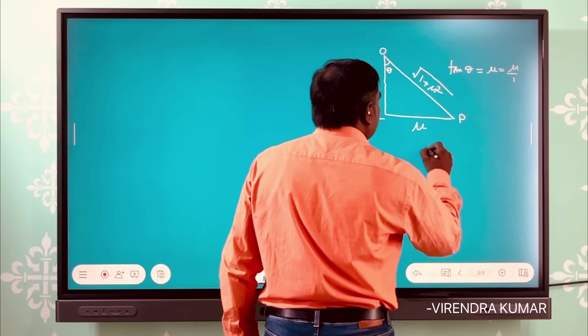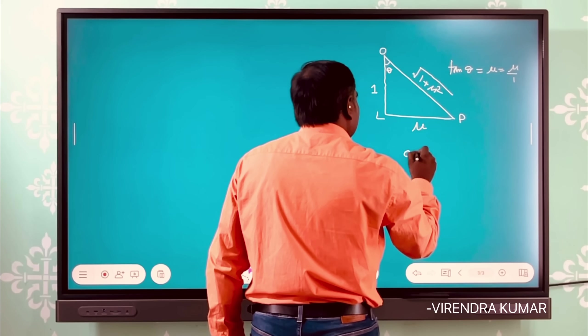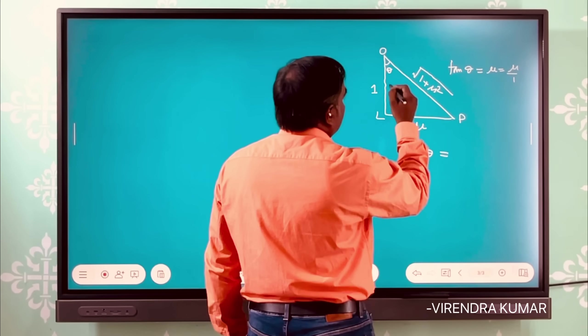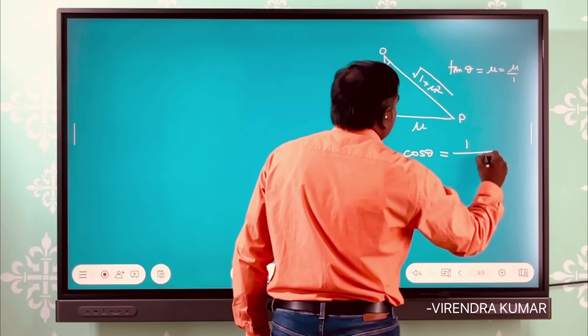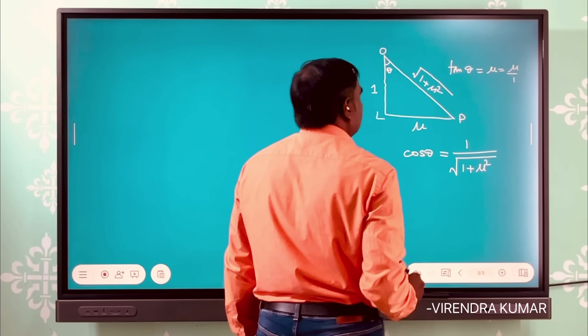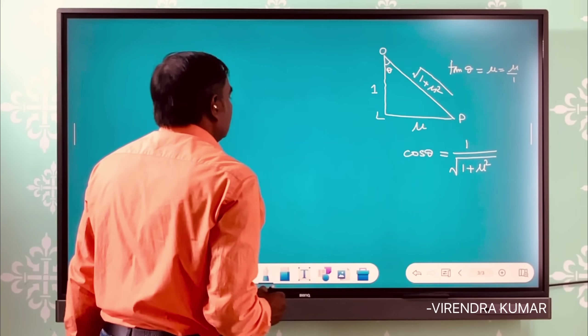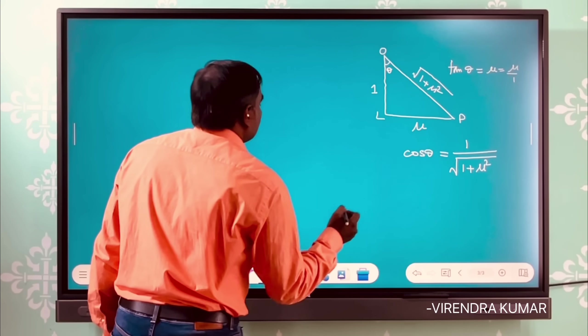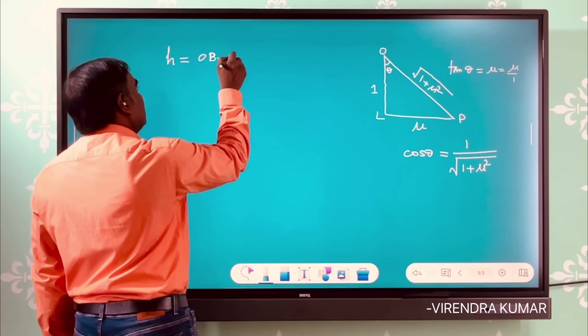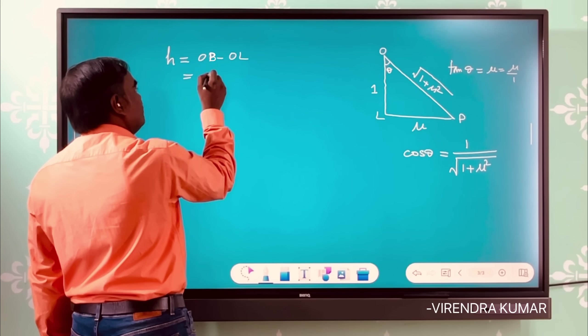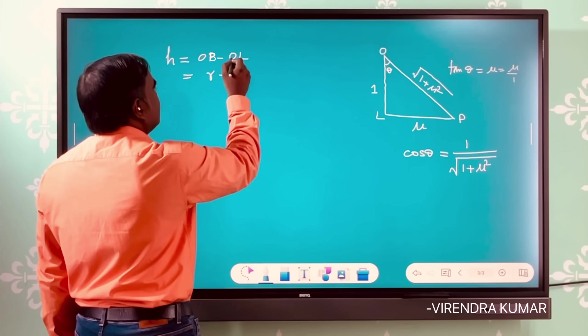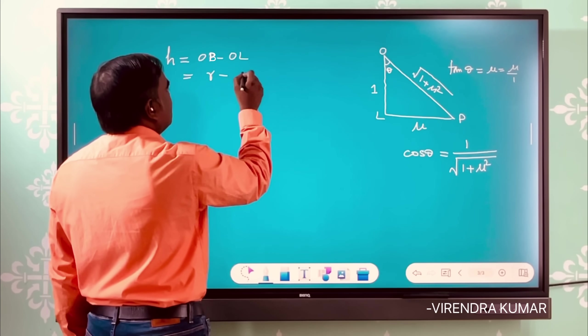So from this we get the cos θ value. Cos θ is equal to 1 upon √(1 + μ²). So let us substitute this value of cos θ in expression h equals r minus OL, radius of the hemisphere. And the OL is equal to OP cos θ.